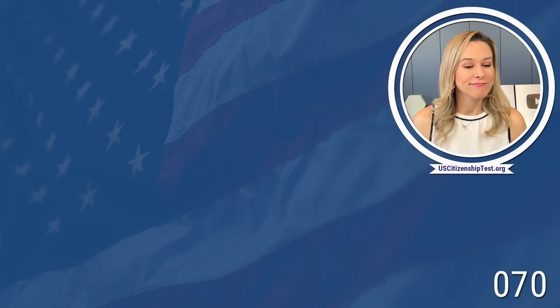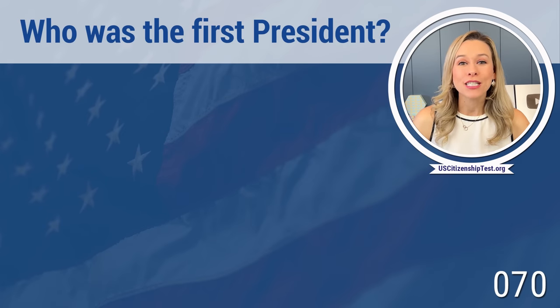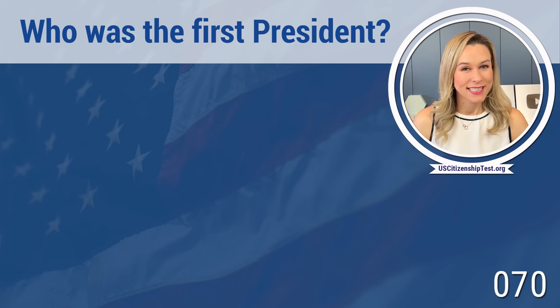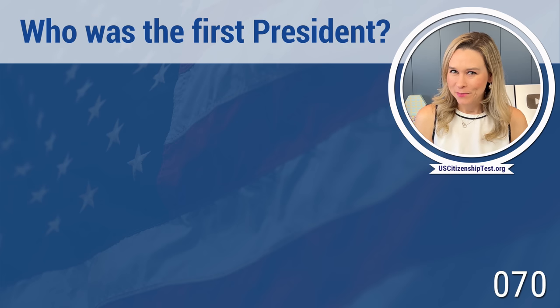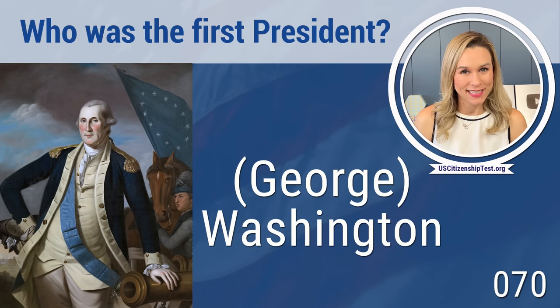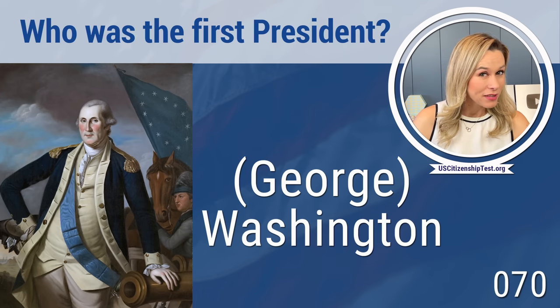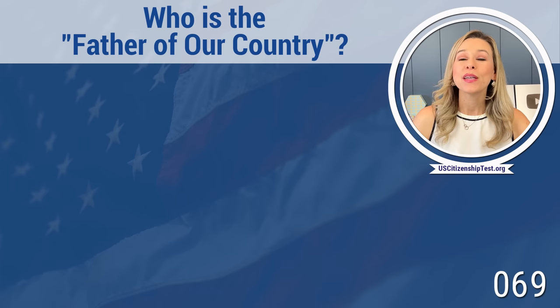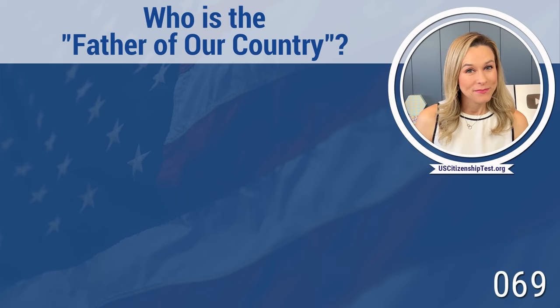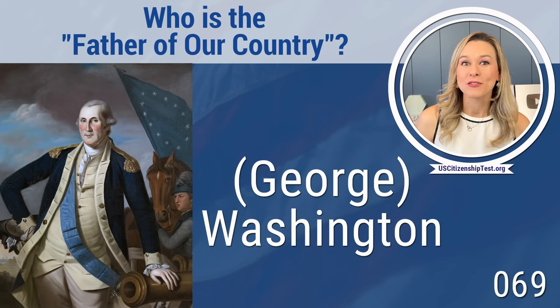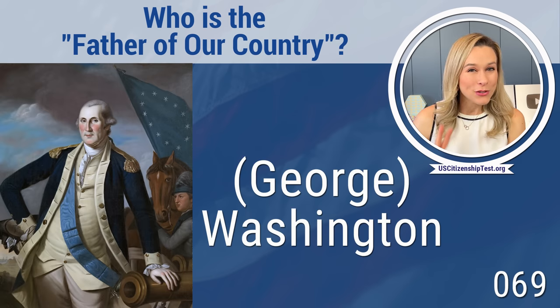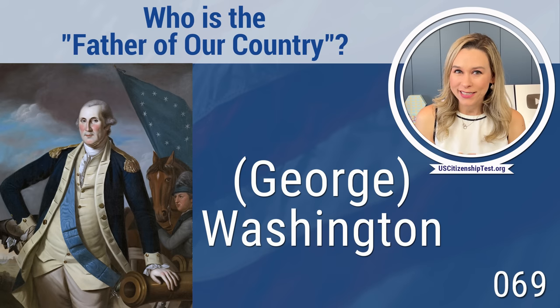The first group is people. Let's talk all about the people. First question: Who was the first president? This is an easy one — George Washington. The next question is related: Who is the father of our country? George Washington. So there are two questions and George Washington is the answer to both.